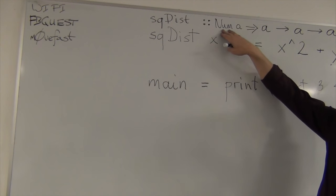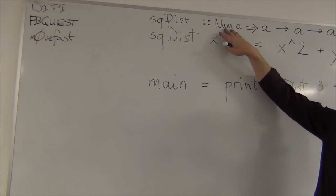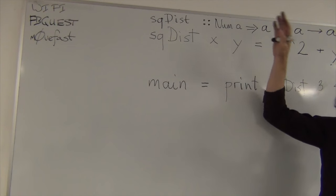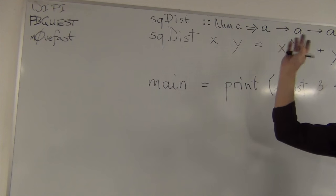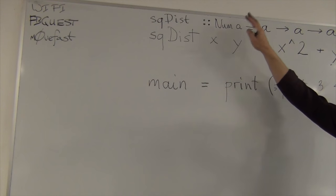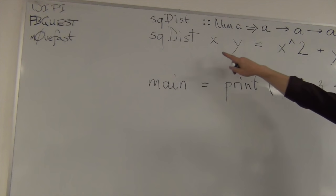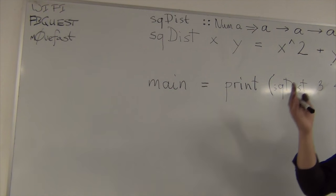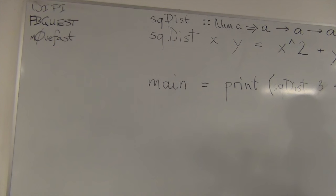For any type A that's in the family num, or actually class, we call it class, class num, which means A has to support things like multiplication and addition and subtraction. And the signature of this function is A, A, A. Okay? Now, what does this mean, these two arrows? So, in general, an arrow means a function type. Right? So, like, if you have A, B, that's a function type from type A to type B. Right?